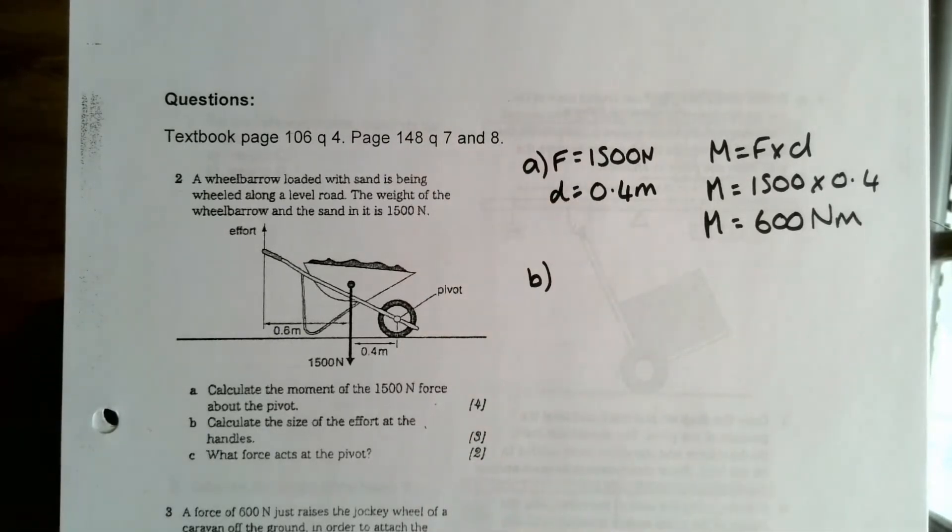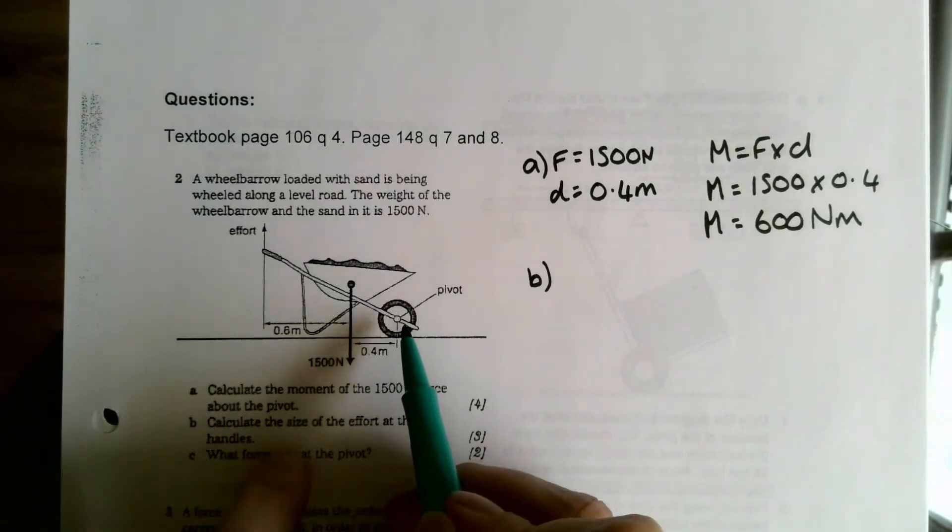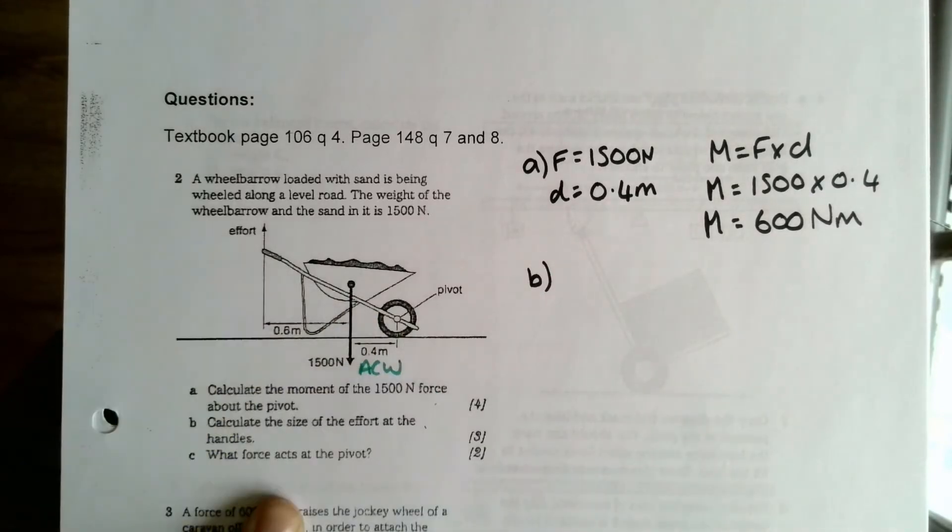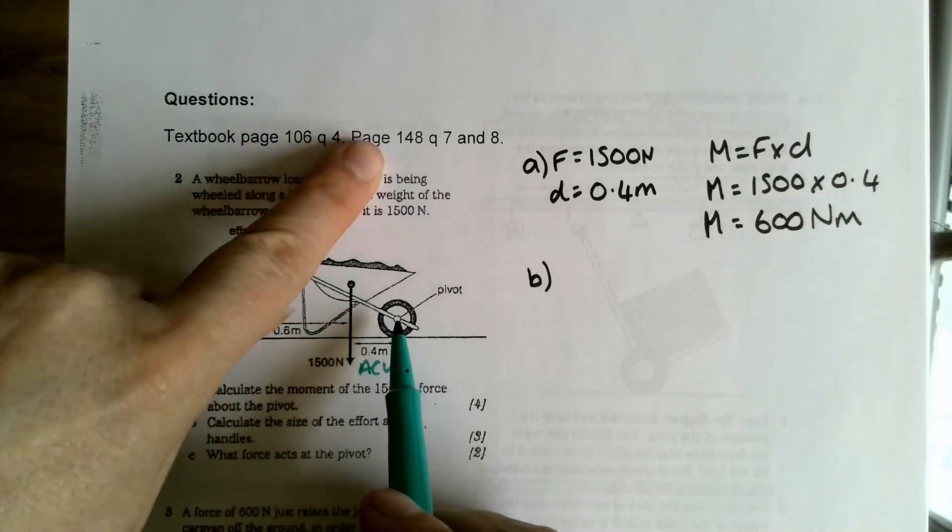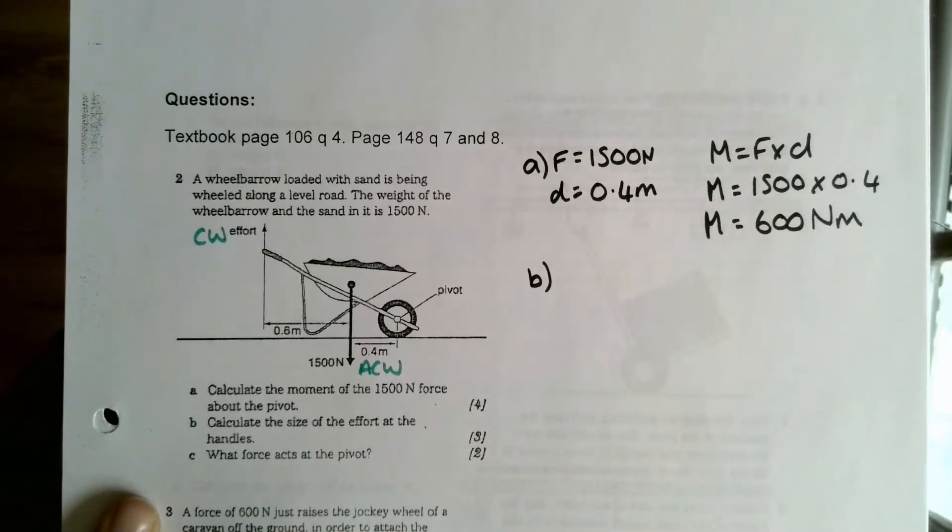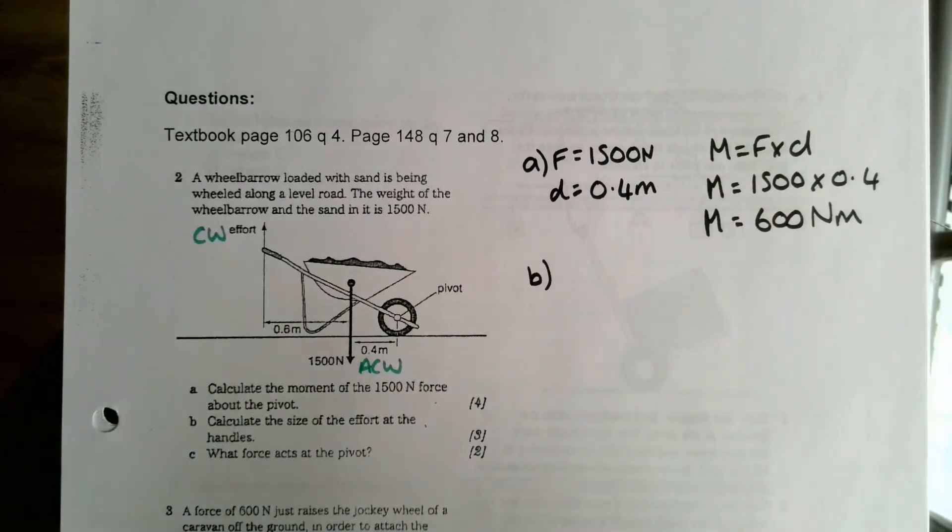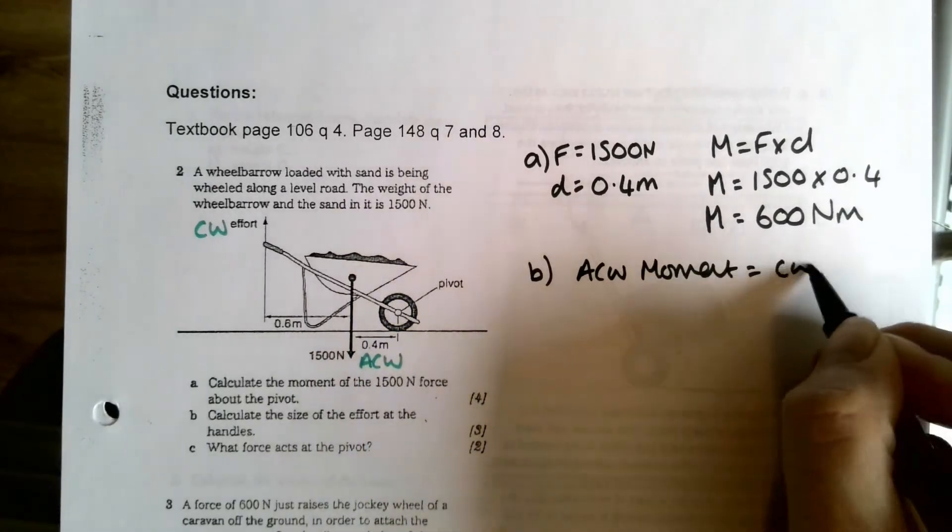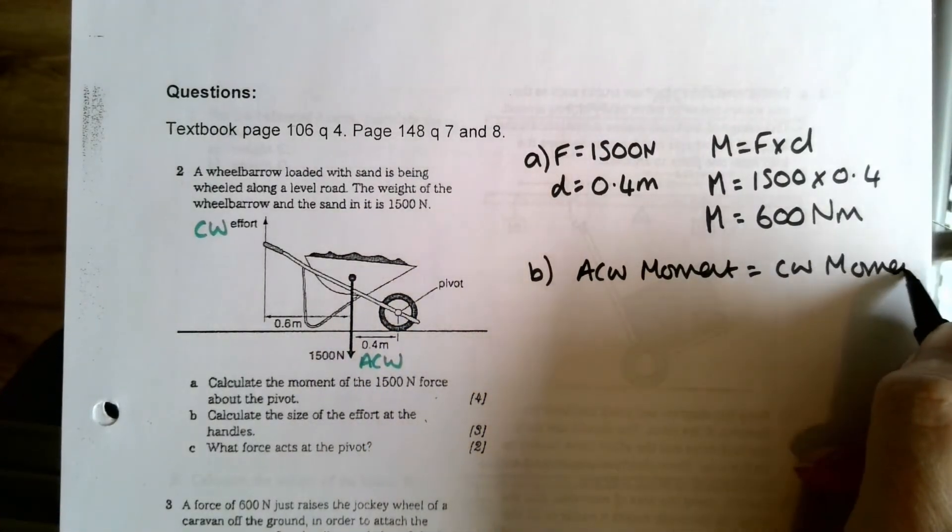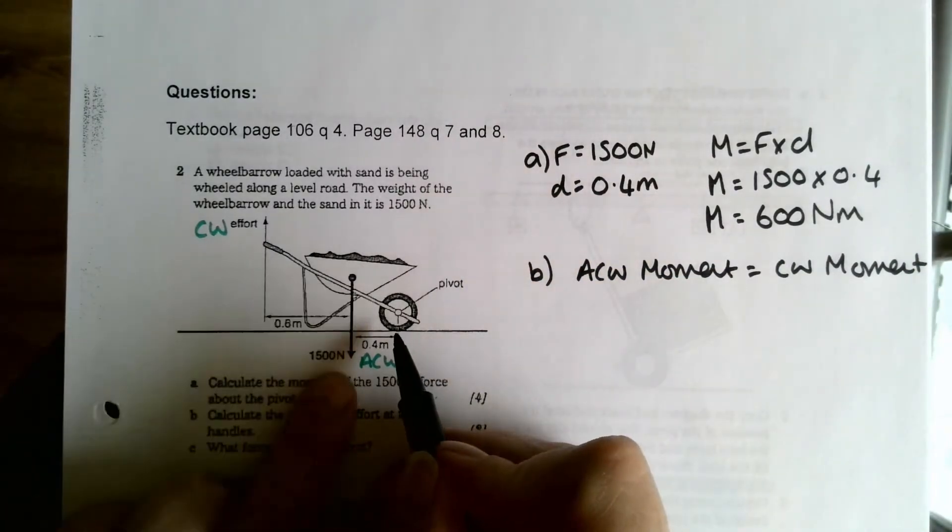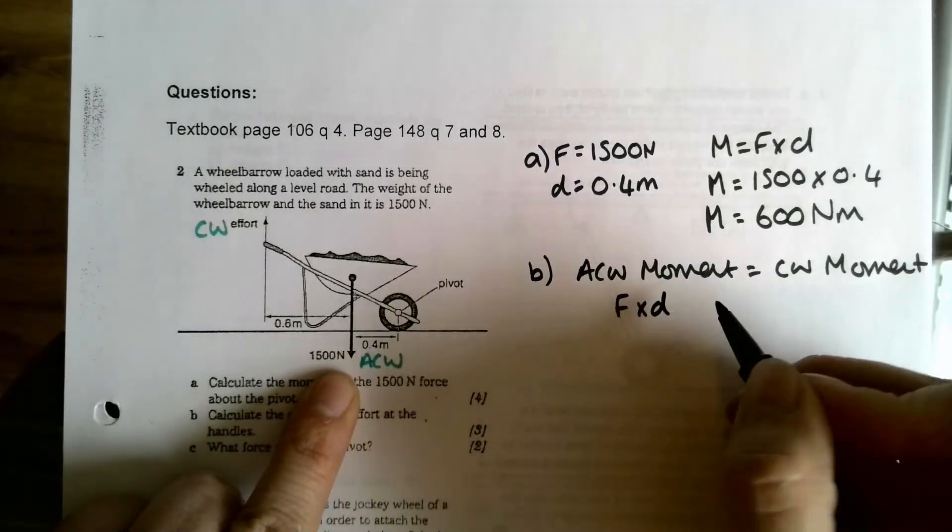So we're going to have to use our anti-clockwise moments equal clockwise moments. If this is my pivot, this weight here is going to be making this turn anti-clockwise, so I'm just going to label that. And the effort is acting clockwise. My laptop doesn't seem to be able to cope with these videos very well, so sorry they're a little bit jerky. Anyway, so I'm going to start this off by saying anti-clockwise moments are equal to clockwise moments.